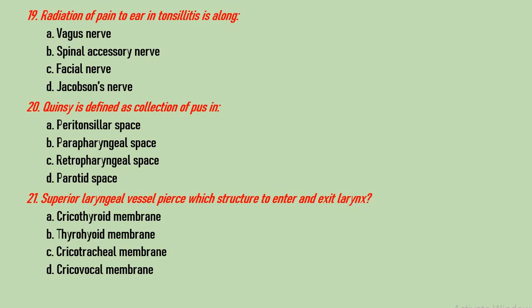Question number 20: Quinsy is defined as a collection of pus in the peritonsillar space, parapharyngeal space, retropharyngeal space, or parotid space? Quinsy is defined as a collection of pus in the peritonsillar space, so called peritonsillar abscess. Question number 21: the superior laryngeal vessels pierce which structure to enter and exit the larynx? Options are cricothyroid membrane, thyrohyoid membrane, cricotracheal membrane, and cricovocal membrane. The correct answer is thyrohyoid membrane. While doing emergency airway surgery, we use the cricothyroid membrane, as there are no blood vessels or nerves there.